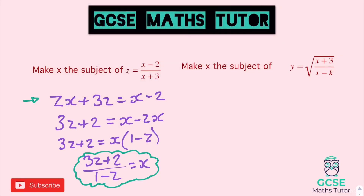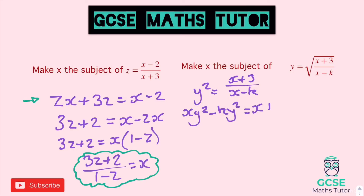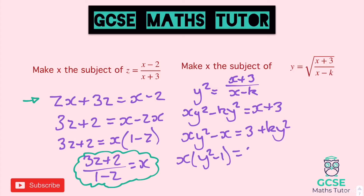So let's have a look at the next one. We've got to square both sides to start with, so y squared equals x plus 3 over x minus k. Again, multiply that denominator over — I'm going to times it straight by the denominator — so xy squared minus ky squared equals x plus 3. Then I can go straight into getting the x's on both sides in one step: add the ky squared over and subtract the x. So we get xy squared minus x equals 3 plus ky squared. Now I can factorise: x brackets y squared minus 1 equals 3 plus ky squared. And finishing it off by dividing by the bracket: x equals 3 plus ky squared divided by y squared minus 1.